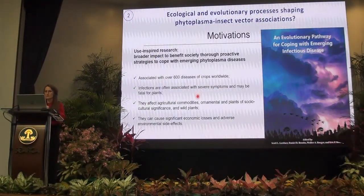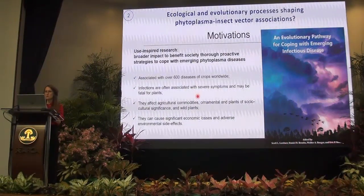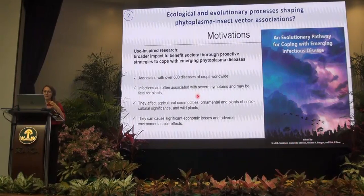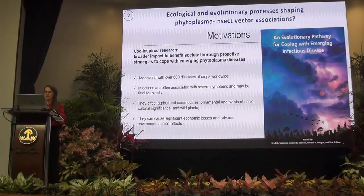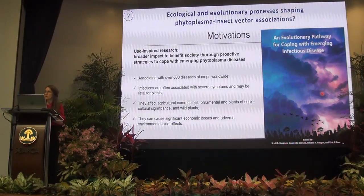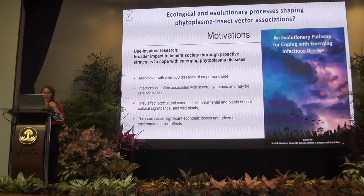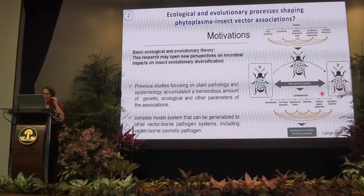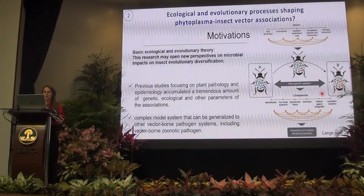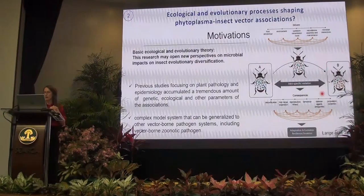The motivation for this research is twofold. We are using a use-inspired approach, and this research has broad impact to benefit society through proactive strategies to cope with emerging phytoplasma diseases. I'm presenting here a book that we just published, to which I contributed several chapters, providing this evolutionary perspective that we are missing regarding the evolution of emerging phytoplasma diseases in agriculture. We also have a basic ecological and evolutionary theory approach to answer more fundamental questions, and this research may open a new perspective on microbial impacts on insect evolutionary diversification.